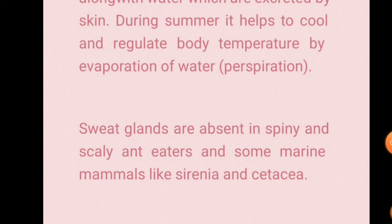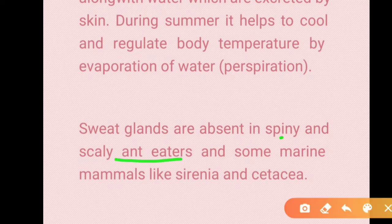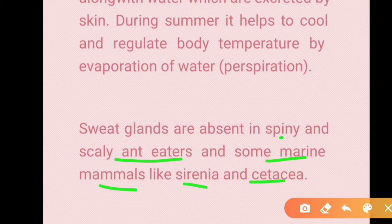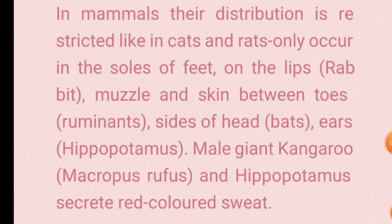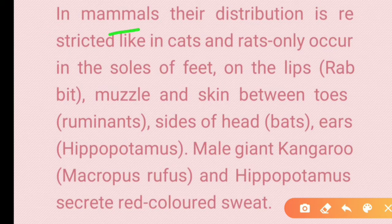Sweat glands are absent in spiny and scaly anteaters like echidna and pangolin, and in some marine mammals like Sirenia and Cetacea. In some other mammals, sweat glands are restricted to specific body regions.